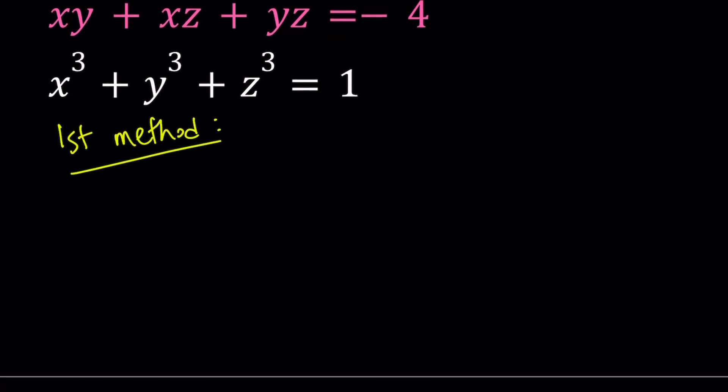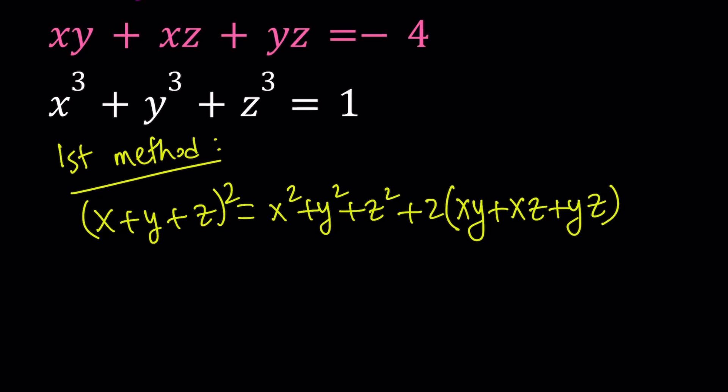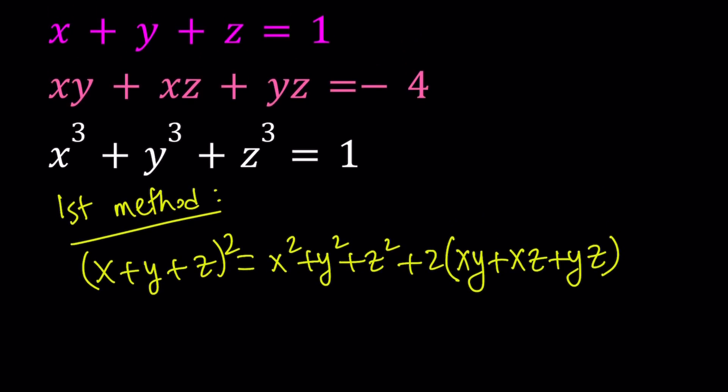For my first method, I'm going to square x plus y plus z. And this is equal to x squared plus y squared plus z squared, and then we have two times the quantity xy plus xz plus yz. Now, one motivation behind this is we already know x plus y plus z and xy plus xz plus yz. So we can go ahead and substitute that.